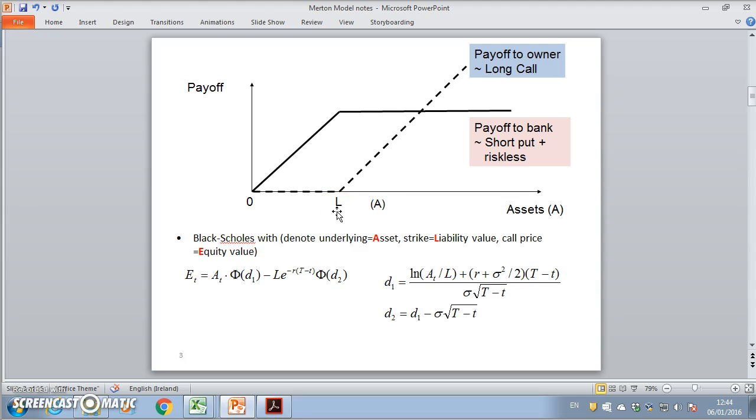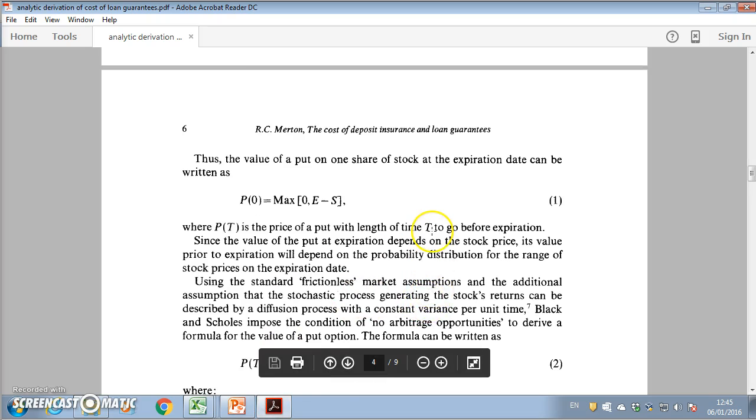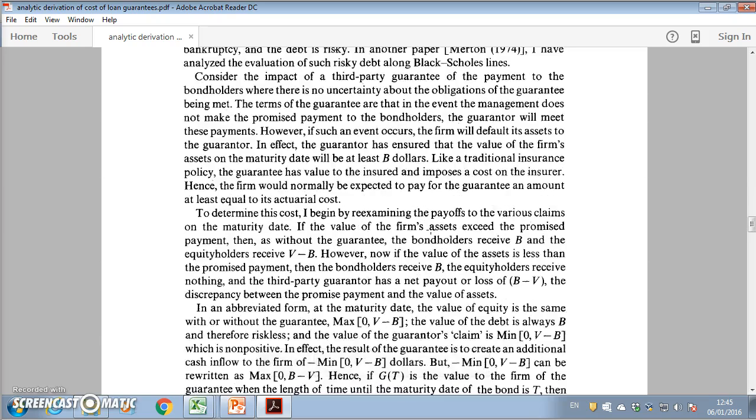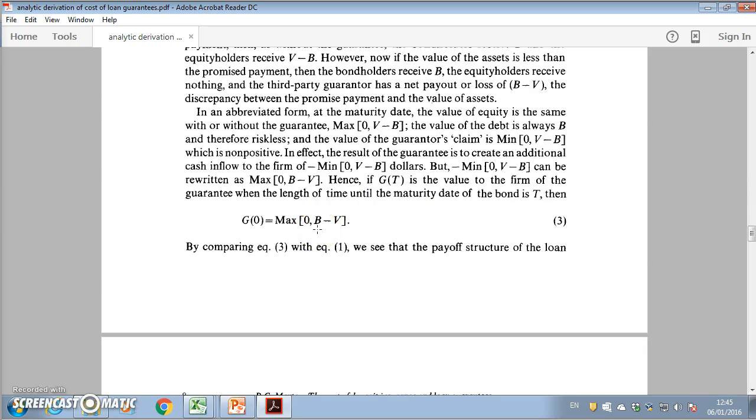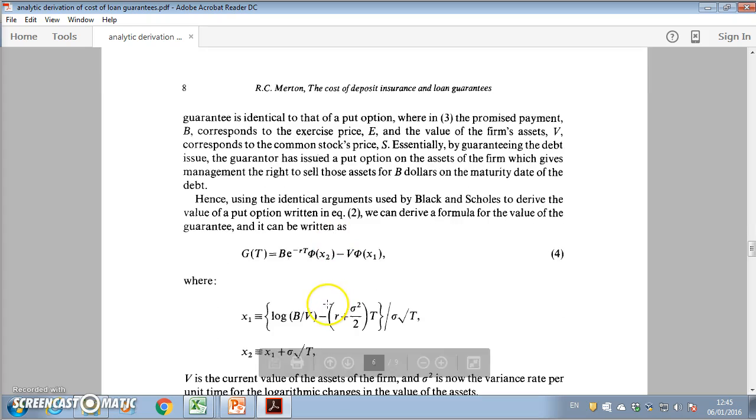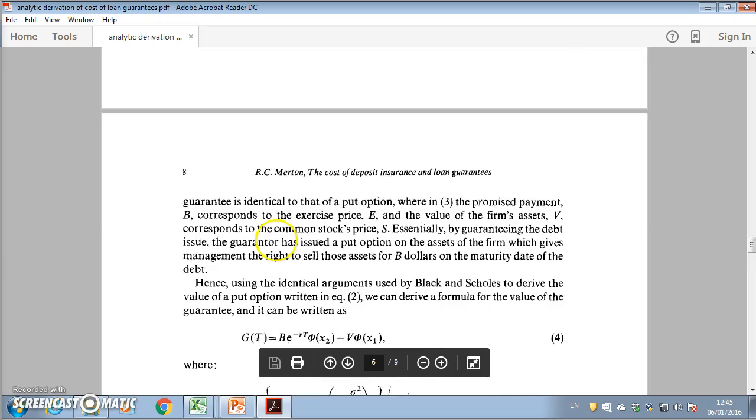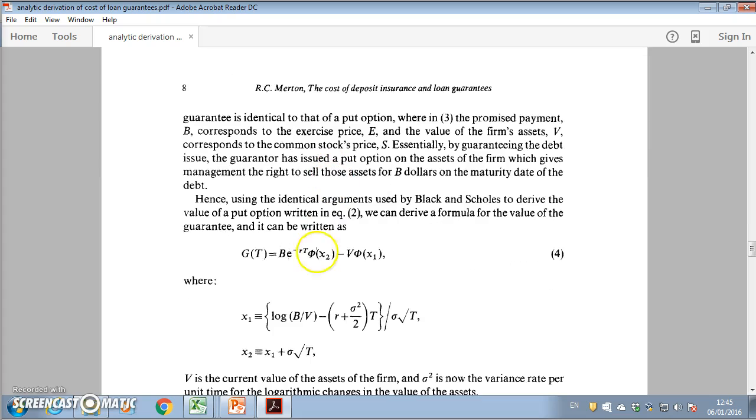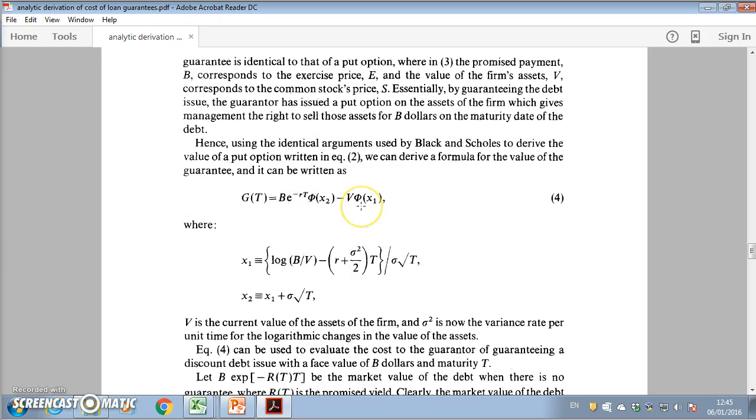Using the framework outlined in Merton 1977, his notation here is given as B for the level of liabilities, which would be L, and V would denote the assets, the value of the assets. Using a Black-Scholes type framework, if this is the intrinsic value when no time remains, when we are looking at this type of protection with some period before maturity or expiration occurs, then we can represent this guarantee as a put option. X1 and X2 here—we have to be careful—X1 is equivalent to negative d1.